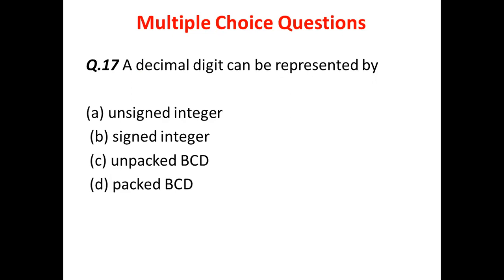Question 6: A decimal digit can be represented by which of the following? The options include signed integer, unpacked BCD, and packed BCD. The answer is C — unpacked BCD. A decimal digit can be represented by an unpacked BCD.